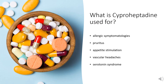What is cyproheptadine used for? In the US, prescription cyproheptadine is indicated for the treatment of various allergic symptomatologies including dermatographia, rhinitis, conjunctivitis, and urticaria, as well as adjunctive therapy in the management of anaphylaxis following treatment with epinephrine. Cyproheptadine is also available over the counter for treatment of pruritus and appetite stimulation. In Australia, it is additionally indicated for vascular headaches, and off-label it is used for serotonin syndrome.